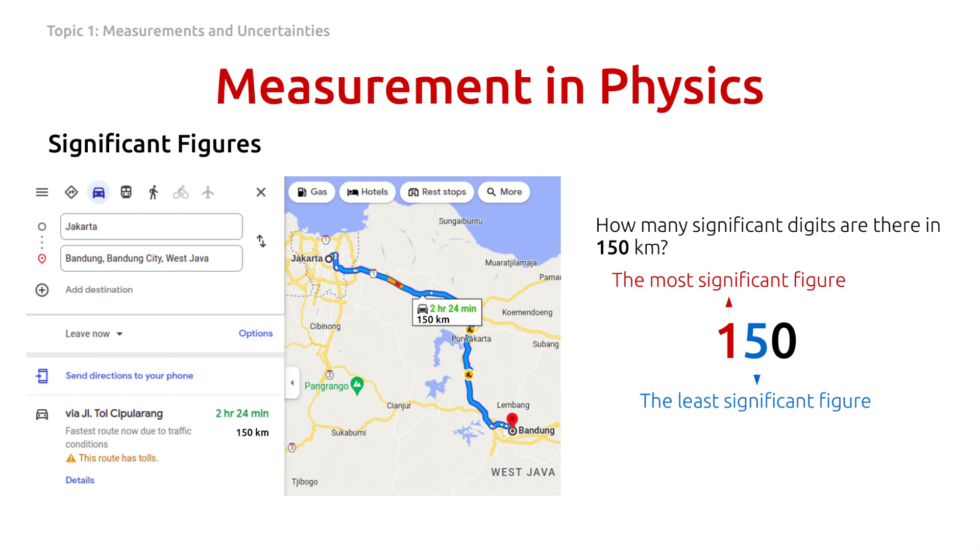What we mean by this is that the first digit is known to be correct. The distance from Jakarta to Bandung is around 100 kilometers. But the second digit is uncertain. Using different routes suggested by Google Maps, this number could be 4, or 5, or 6, and so on.